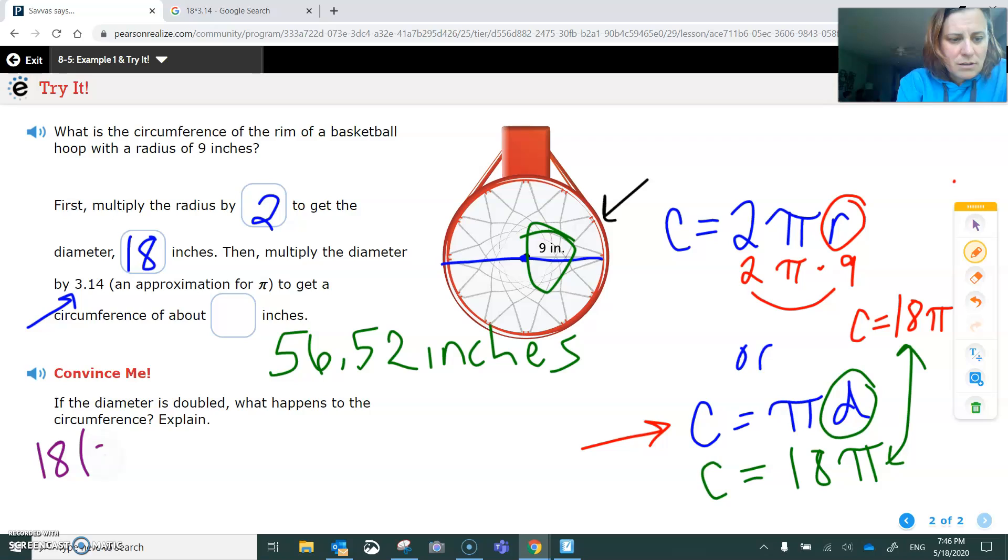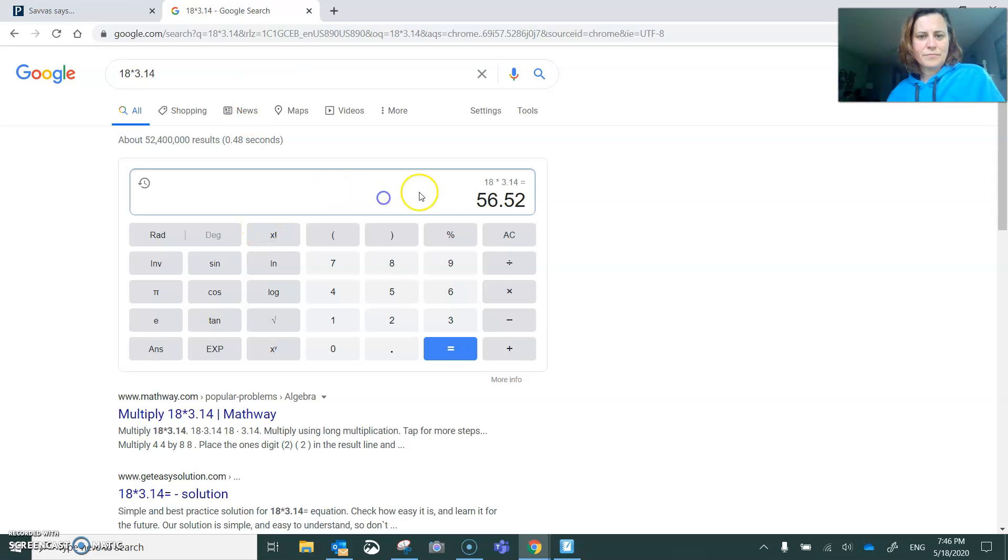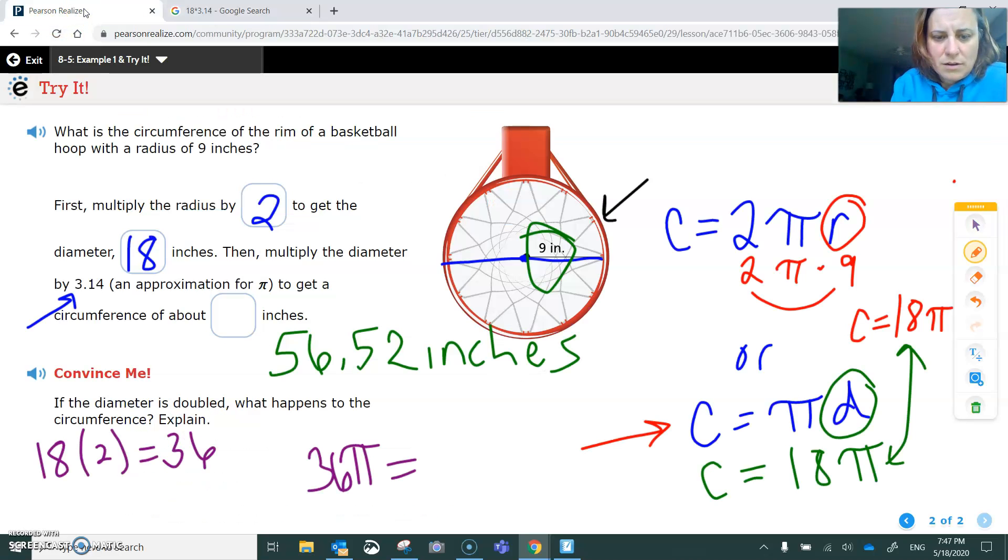And 36 times π is... we end up getting 113.04, which by the way is this number doubled. So if you double the circumference, you also double the diameter, you also double the circumference.